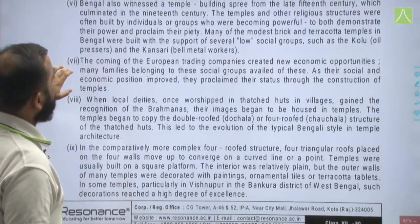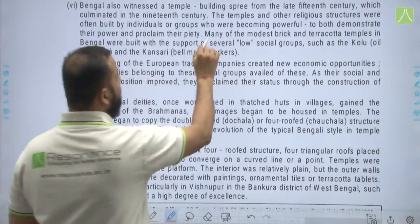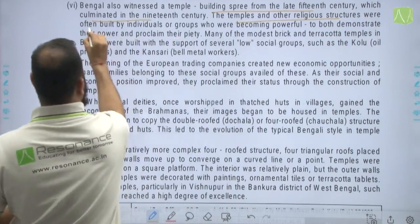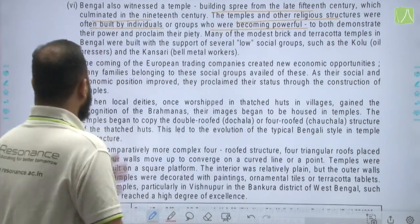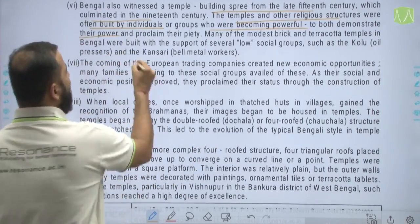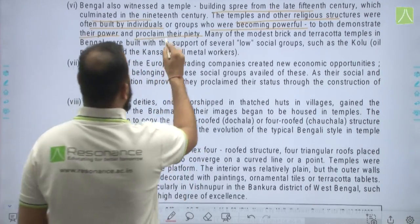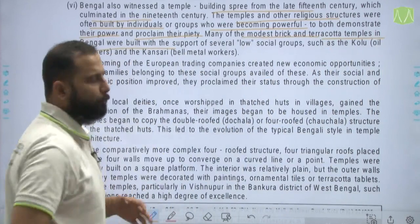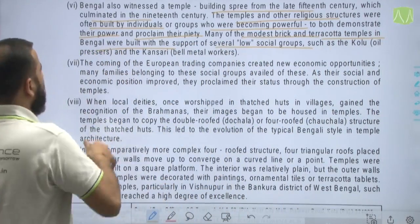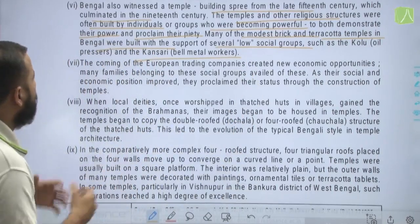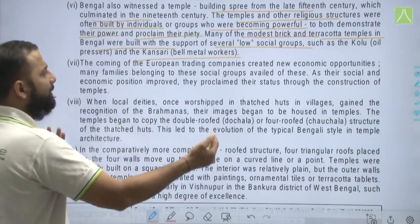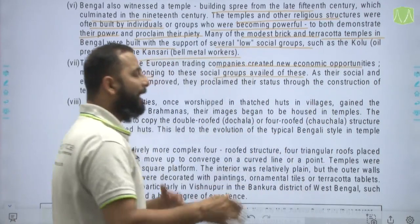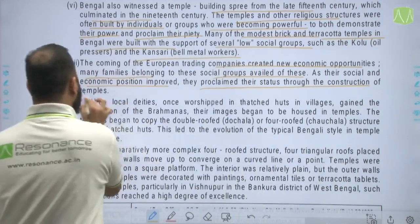Bengal also witnessed a temple-building spree from the late 15th century which culminated in the 19th century. Temples and other religious structures were often built by individuals or groups who were becoming powerful, to demonstrate their power and proclaim their deity. Many modest brick and terracotta temples in Bengal were built with the support of even low social groups such as the Kolu — oil pressers — and the Kansari — bell-metal workers. The coming of European trading companies created new economic opportunities, and as their social and economic position improved, these groups proclaimed their status through the construction of temples.